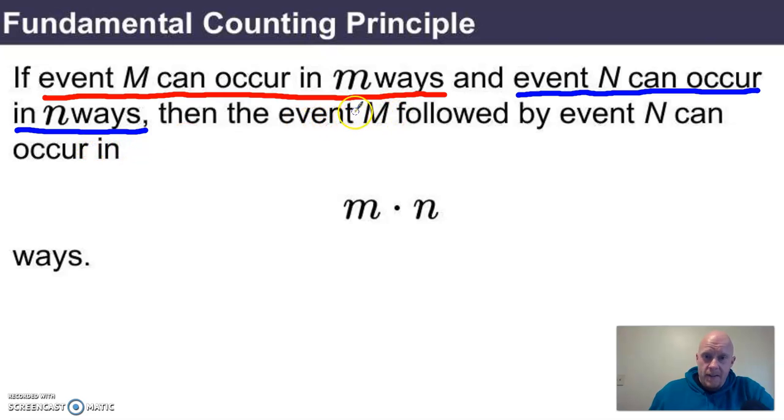Then the event of M and then N can occur in m times n ways. In other words, what I'm saying here is if I need a sequence of events to happen, and I know how many ways each of those singular events can happen, all I need to do to determine the number of possible outcomes for that sequence of events is to multiply the numbers that I know.